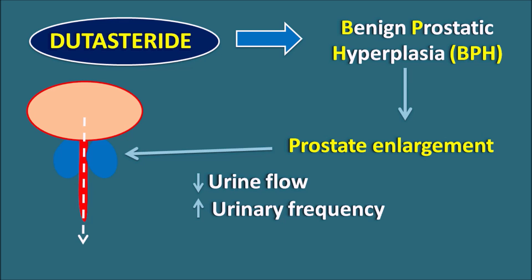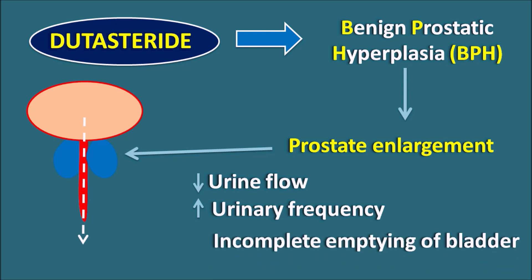The bladder fills with urine but patients are unable to empty it. Decreased urinary flow and increased urinary frequency are the two important symptoms of benign prostatic hyperplasia, resulting in incomplete emptying of the bladder in patients.